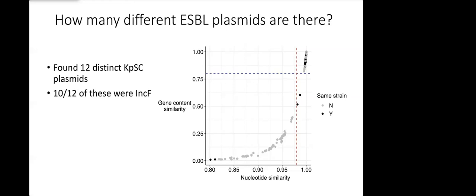Ten of these had IncF replicons, they were generally pretty large at least 100 kilobase pairs in size, and the vast majority of them carried additional AMR genes on top of the ESBL gene.